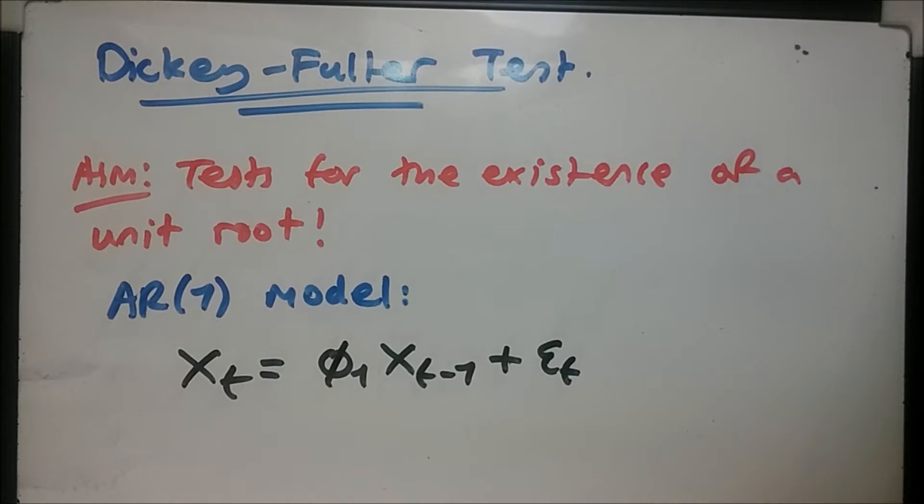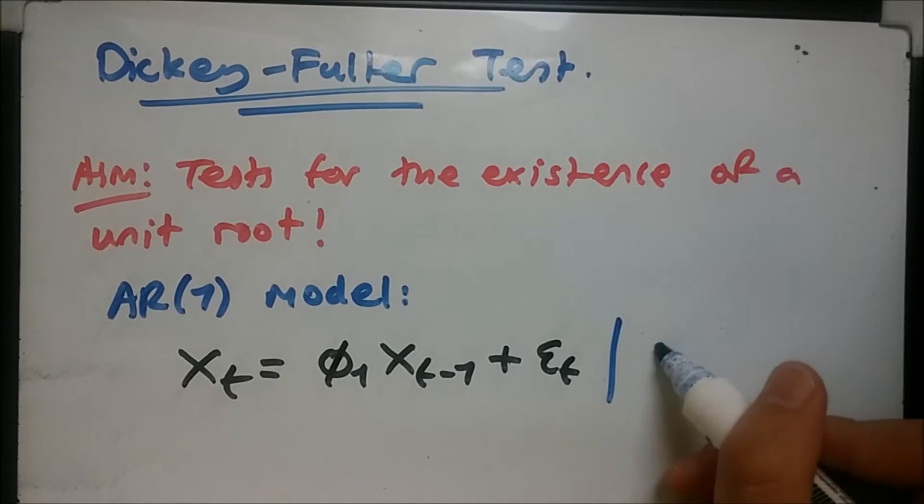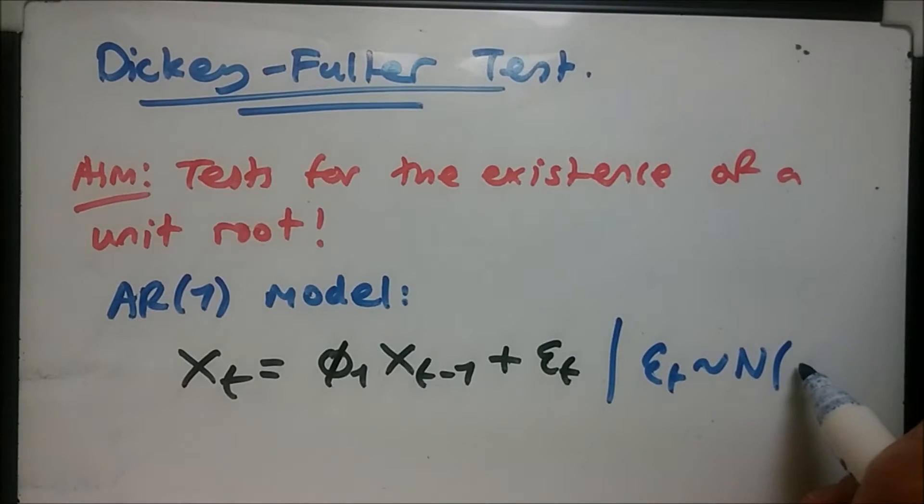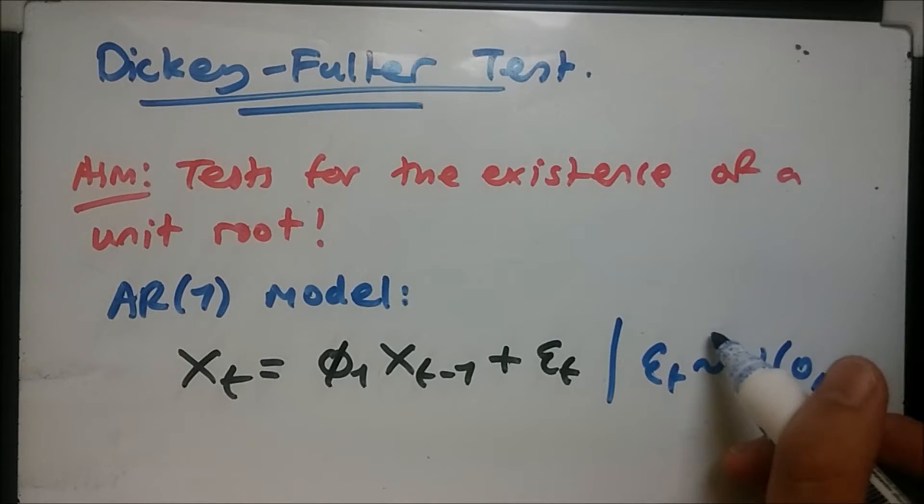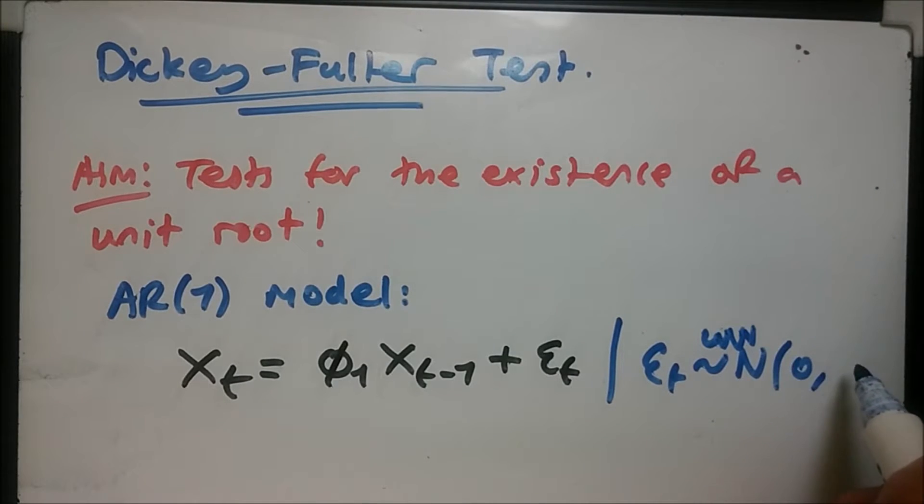Their test was used to test whether or not a unit root was present in an autoregressive model. In this example we're going to test it with a very basic case using the AR(1) model, where phi_1 is the coefficient of X_t minus 1, t is the time index, and epsilon_t is the error term. Most of the time this follows a white noise process. Remember that the white noise process is normally distributed with mean zero and variance sigma epsilon squared.